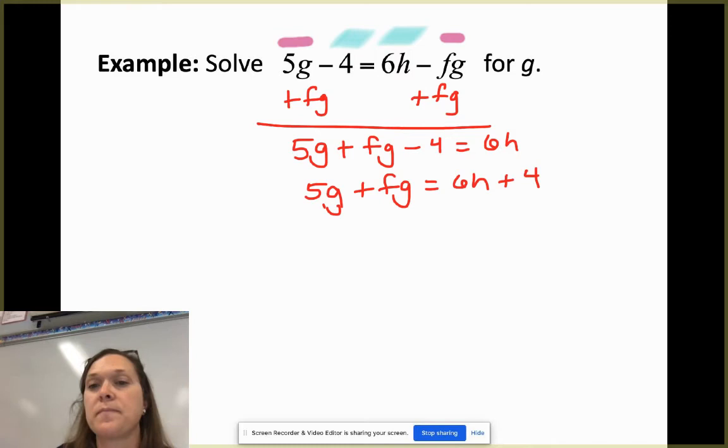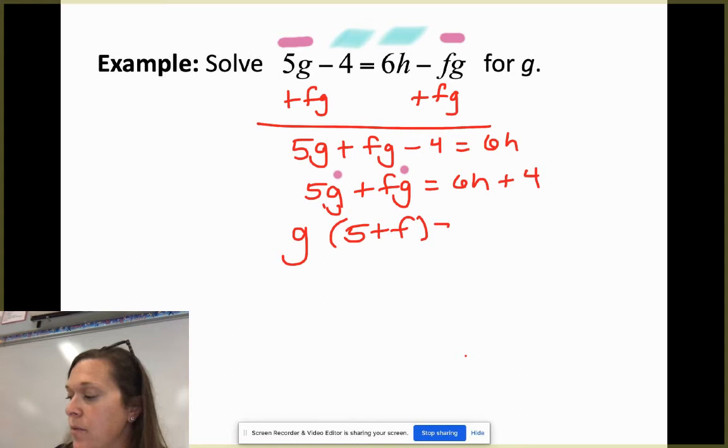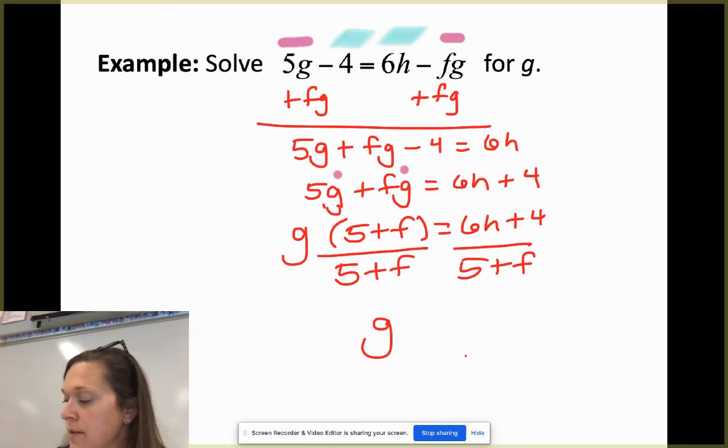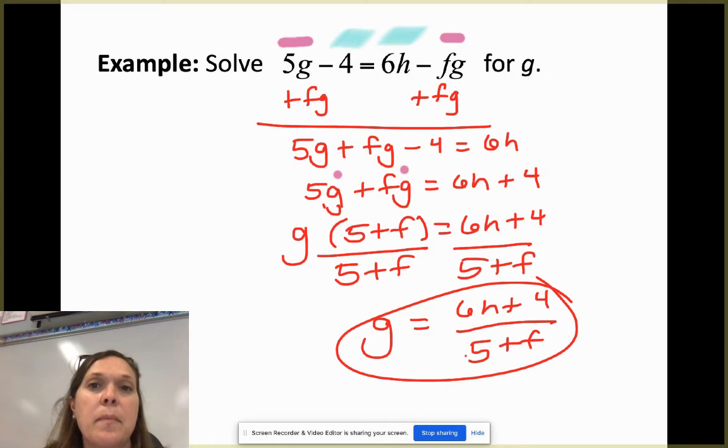Now let's move the 4 over by adding it. So 5G plus FG is equal to 6H plus 4. So now again, I have two G's. I want to take it to one G, so I'm going to factor it out or use the reverse of the distributive property, which gets you 5 plus F equals 6H plus 4. Dividing out that 5 plus F, we'll get the G all by itself. So we end up with G is equal to 6H plus 4 all over 5 plus F. Circle it. Call it good. So hopefully you feel like you're pretty sufficient in the manipulation of these formulas, these literal equations.